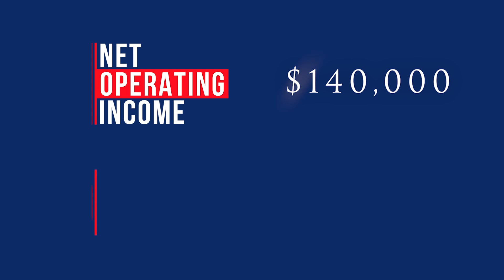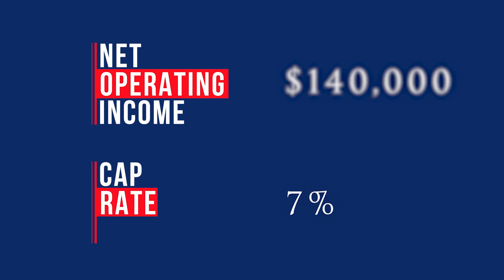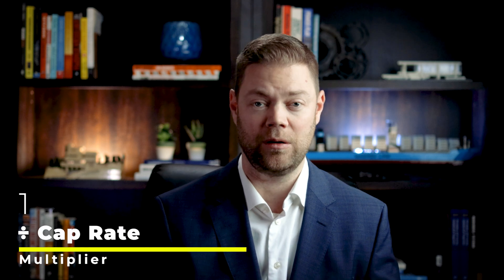Here's an example. A property has net operating income of $140,000 and the cap rate is 7%. Dividing $140,000 by 7% produces a value of $2 million. And a quick tip: if you take the reciprocal of the cap rate — that is, divide one by the cap rate — you'll get a multiplier. So with a 7% cap rate, 1 divided by 7% gives you 14.28. For every dollar of NOI, the building will theoretically be worth $14.28. If you have $100,000 in NOI, the building's value can be estimated at $1.428 million.